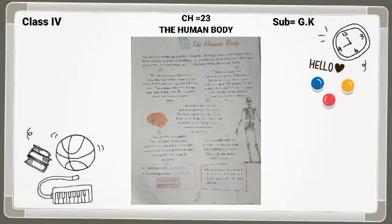Our muscles help us to make our body move. हमारे जो muscles होते हैं, वो body के movement के लिए बहुत necessary होते हैं. From smiling to jumping - मुस्कुराने से लेके कूदने तक. Our body has about 640 muscles. हमारे शरीर में about 640 muscles होते हैं.